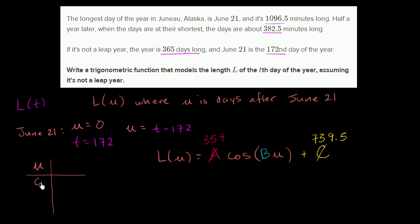When U is zero, we're zero days after June 21st. We're at our maximum point. And we already said that what we want the cosine function to evaluate to at that point is 357 times cosine of zero plus 739.5.